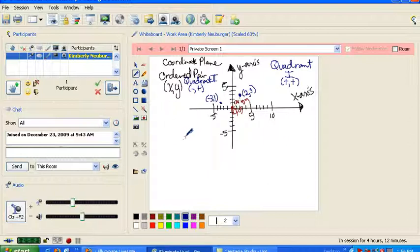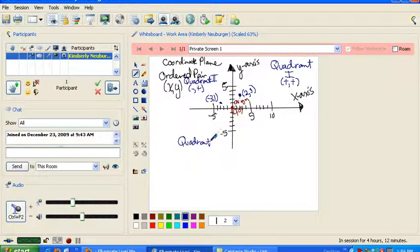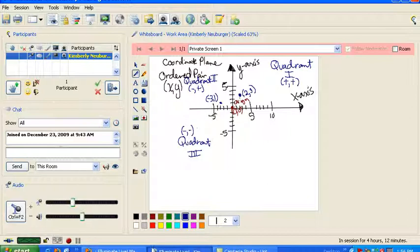Continuing around, this section here is quadrant 3. And in this section, the x's are negative, and so are the y's. So, it's negative x, negative y. So, if I have the point (-5,-3), that's negative 5, and then down 3. It's located right here.